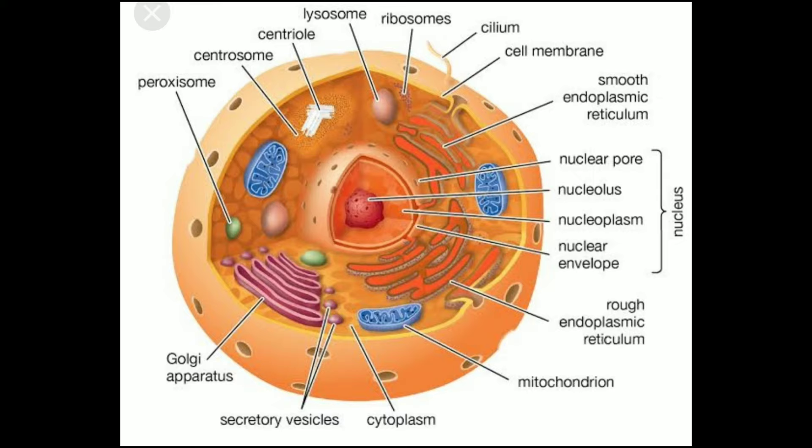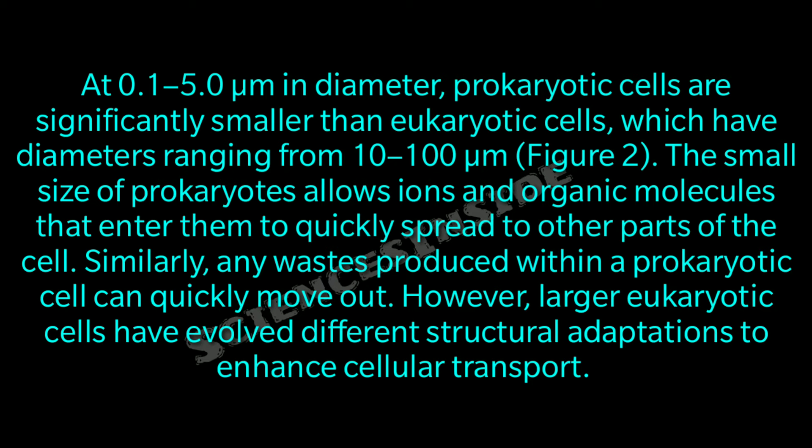In the diagram, the nucleus is at the center; the blue-colored structures are mitochondria, the pink is the Golgi apparatus, the orange is the endoplasmic reticulum, and there are ribosomes, lysosomes, and other organelles as well. Prokaryotic cells are significantly smaller than eukaryotic cells — 0.1 to 5.0 micrometers in diameter for prokaryotes, compared to 10 to 100 micrometers for eukaryotes.